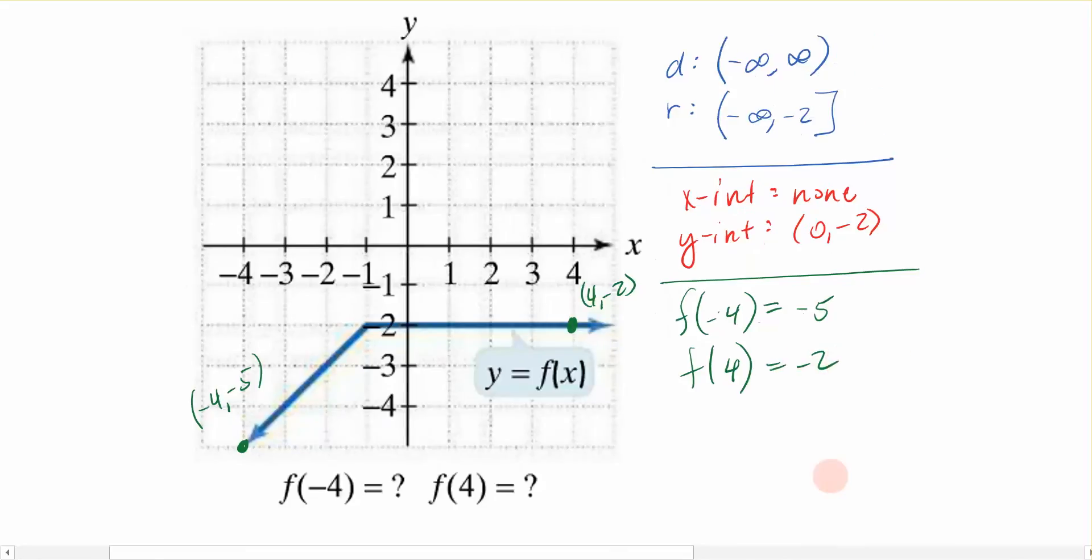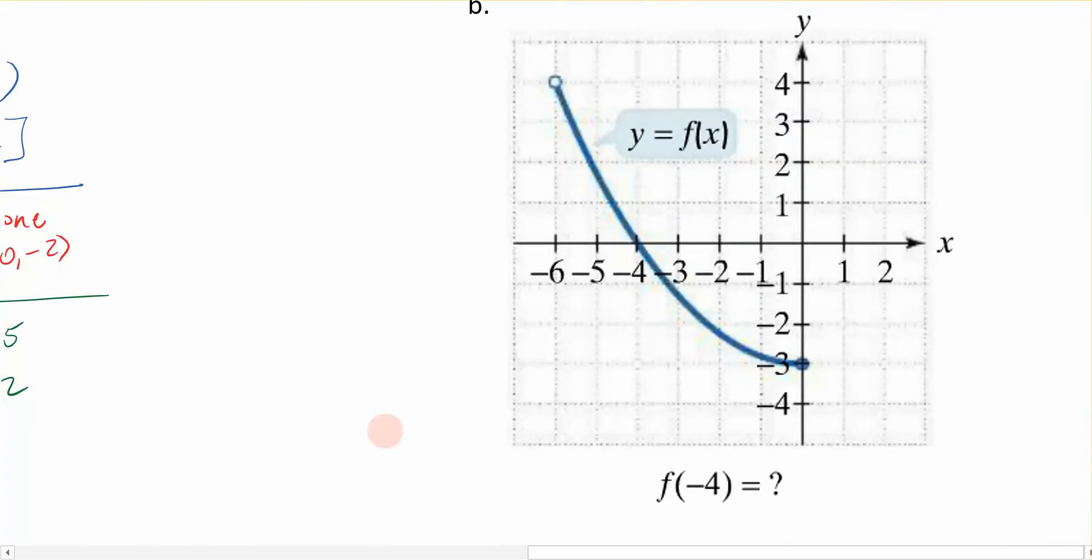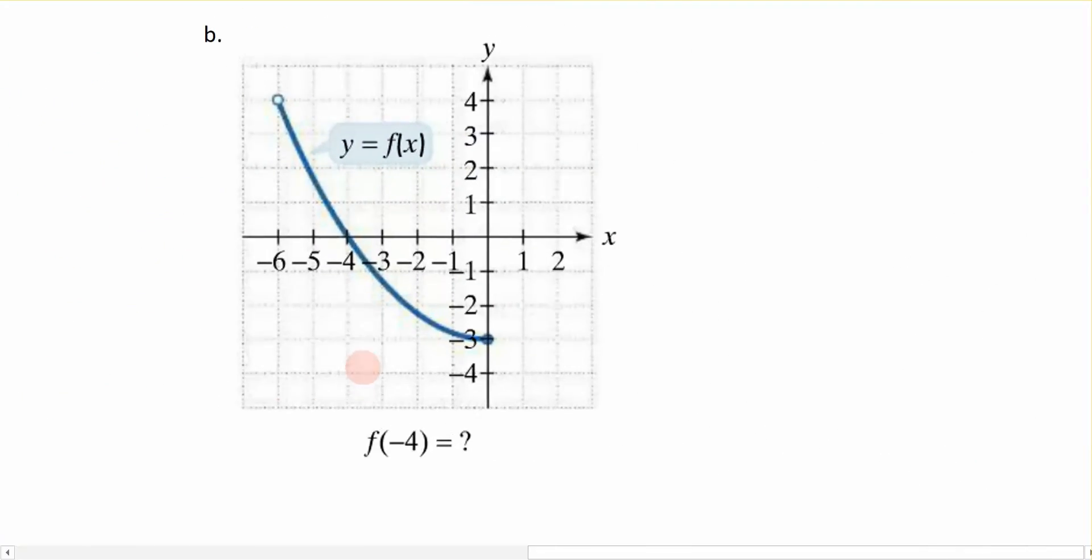Let's practice that again on this example. Same concept. Again, we're going to use the given graph, and we're going to find domain range, intercepts, and missing values. So the domain of this function, possible x values. Notice that my function starts right there. It starts at negative 6.